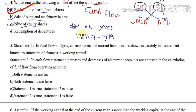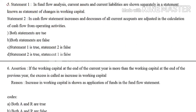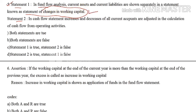Fifth question: there are two statements. Statement one — in the fund flow analysis, current assets and current liabilities are shown separately in the statement known as the Statement of Changes in Working Capital. This is correct because the Schedule of Changes in Working Capital does show current assets and current liabilities separately.